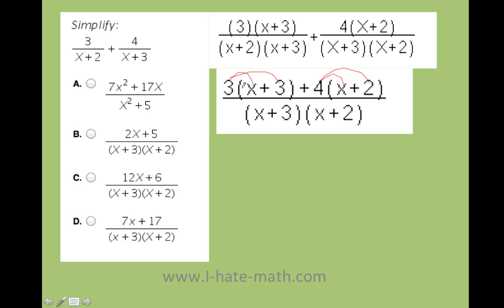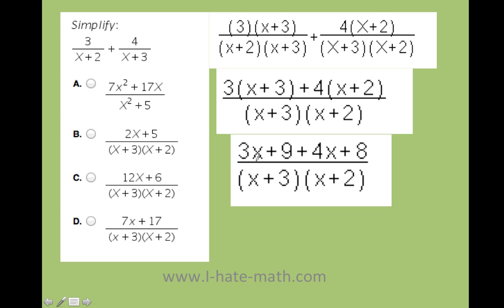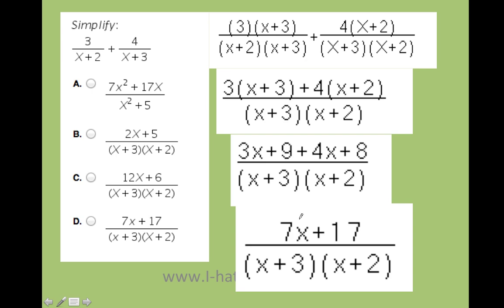You have now the same denominator. We're going to distribute the numbers. And look what you have: 3x plus 9 plus 4x plus 8. Now I can group the ones that are the same, which in this case I have 3x plus 4x and 9 plus 8.